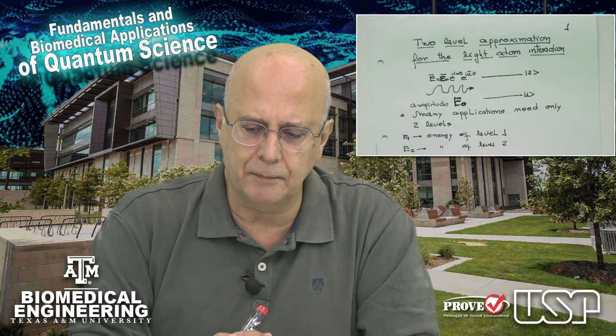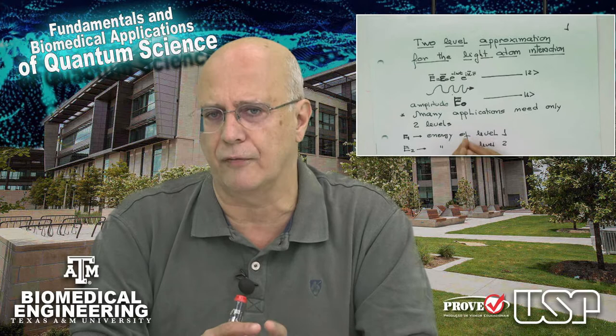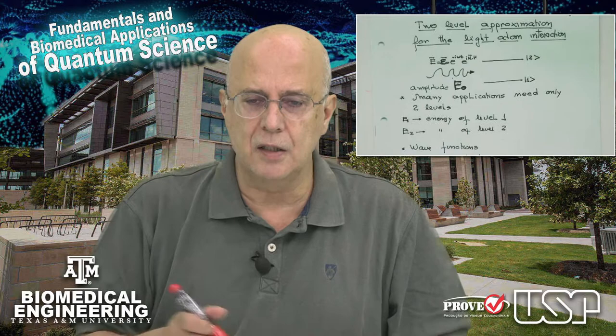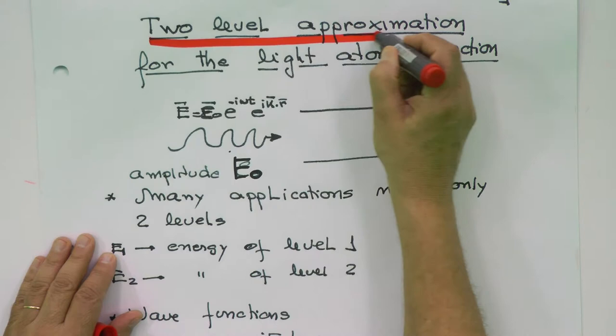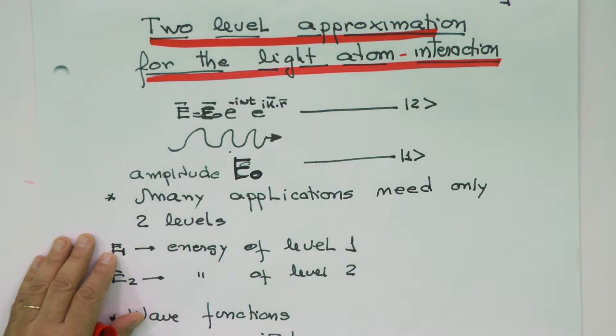The spin of the electron is a real two-level system. In many applications we can consider two levels and understand a lot of things just using a two-level approximation. So the topic of today is a two-level approximation for the light-atom interaction.